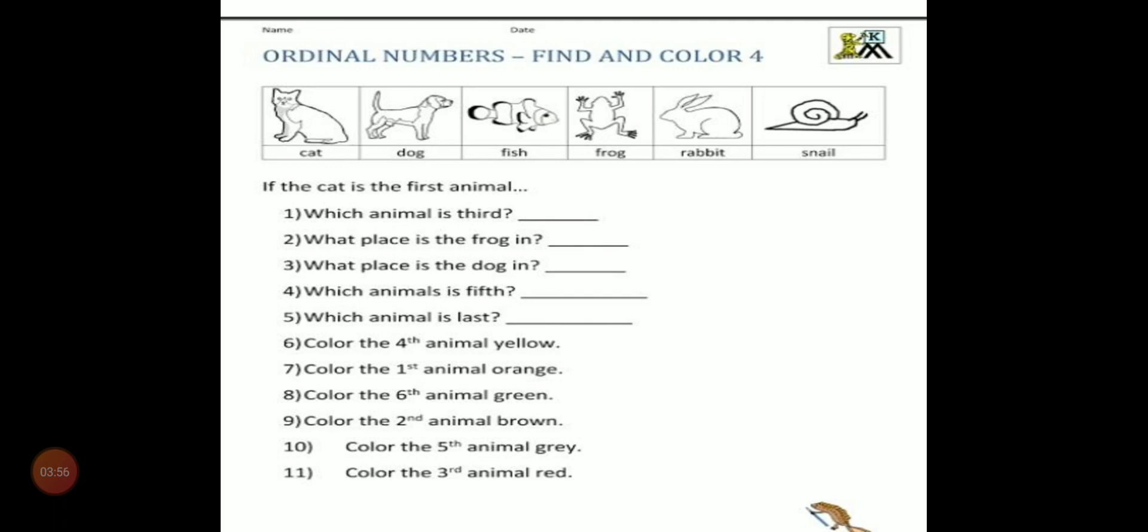Color the fourth animal yellow, color the first animal orange, color the sixth animal green, color the second animal brown, color the fifth animal grey, color the third animal red.